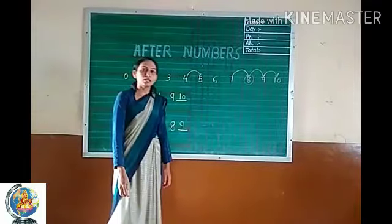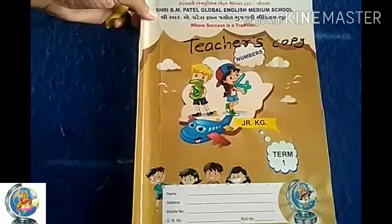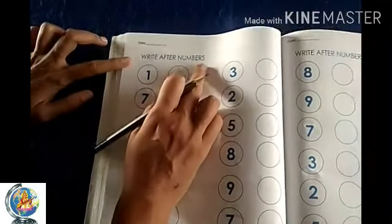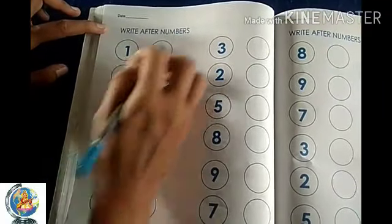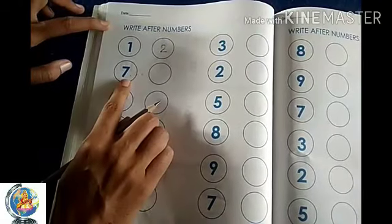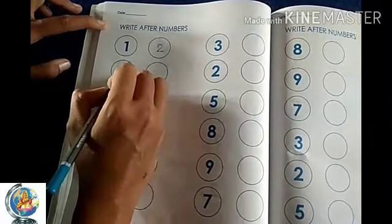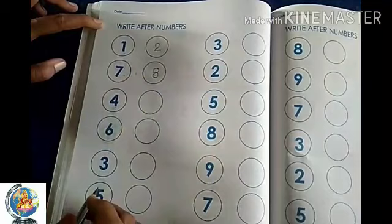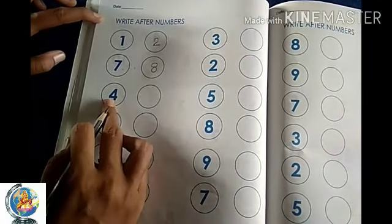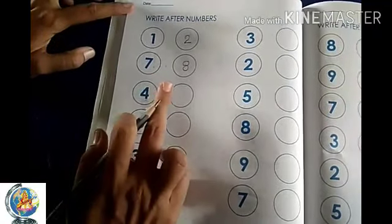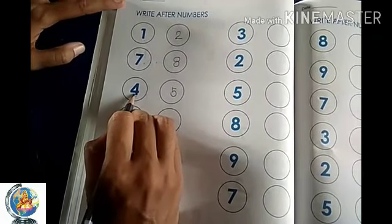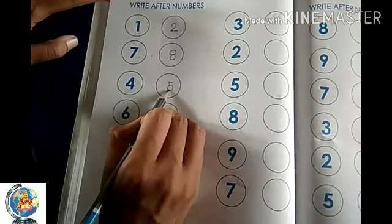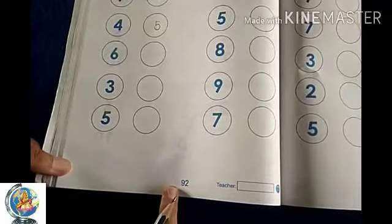Let's look in our maths notebook. Take our maths notebook and open to page number 92. Write the after numbers. Which number is this? Number 1 — what comes after 1? Count: 1 and 2. Which number is this? Number 7 — what comes after 7? 8. Which number is this? Number 4 — what comes after 4? 1, 2, 3, 4 and 5. After 4, number 5 comes. So write number 5. This way, finish your page 92 and 93.